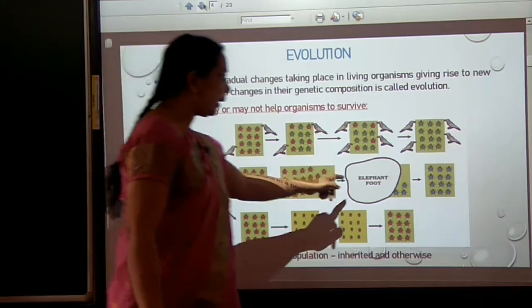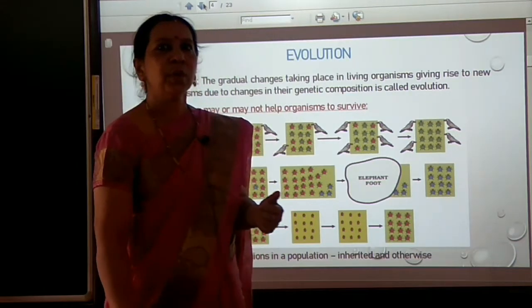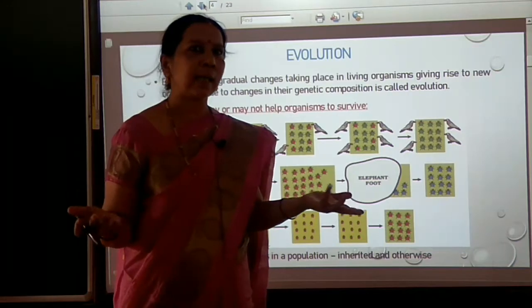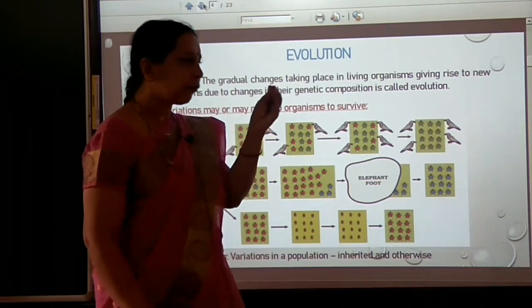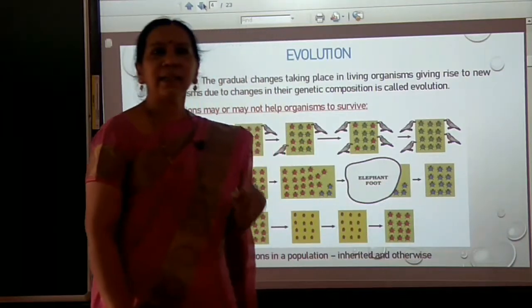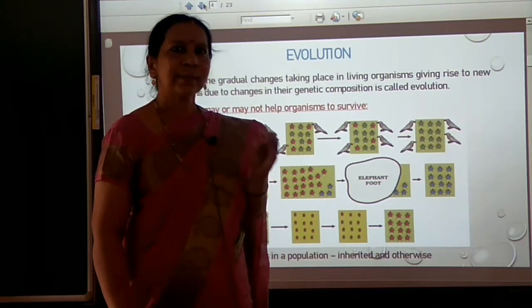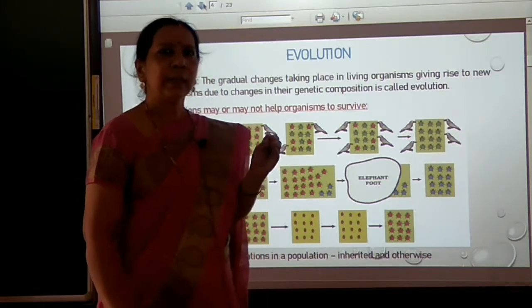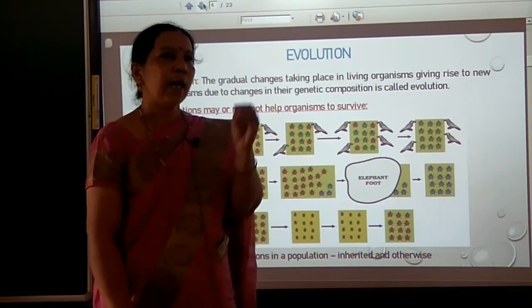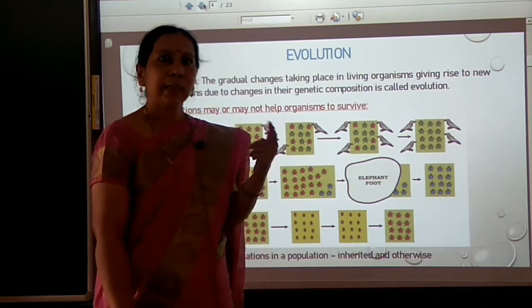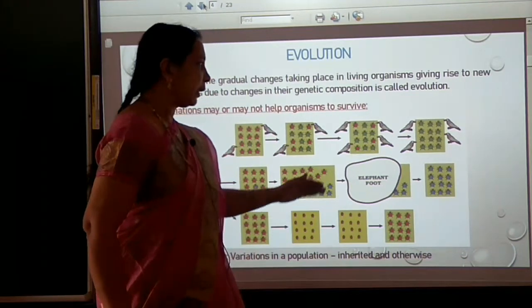Imagine another situation — an elephant rushes into the bush and stamps on it, so that without looking at the colors, both red and blue beetle populations are destroyed. But accidentally, a few blue beetles survived. Here, the blue color did not help the organism to survive — it was accidental survival by chance. If there were more beetles, the elephant could not cause such havoc, but in small populations even accidental survival can have an impact.